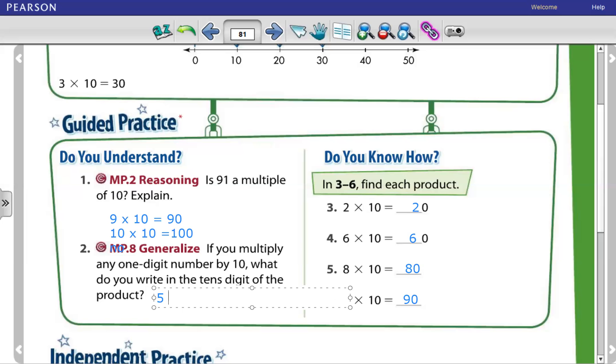So in the tens place, you have to write the 5. And in the ones place, you have to write the 0.